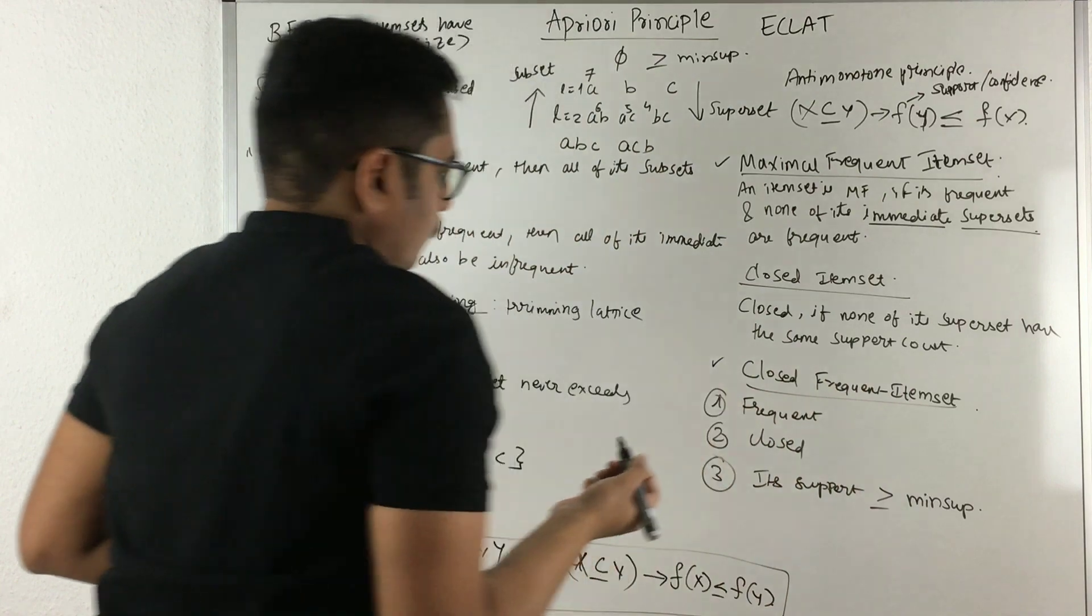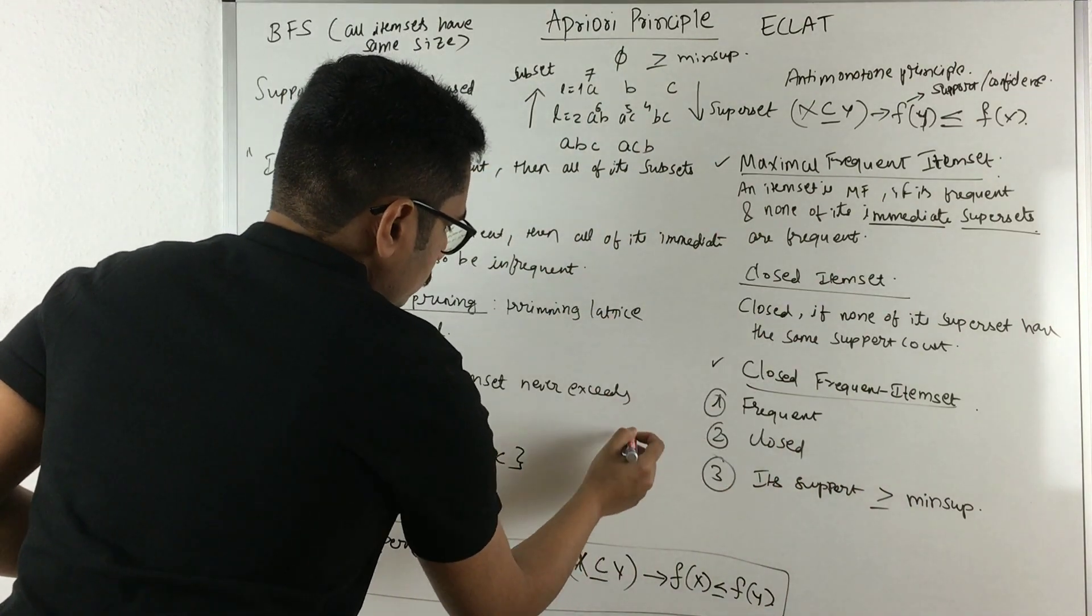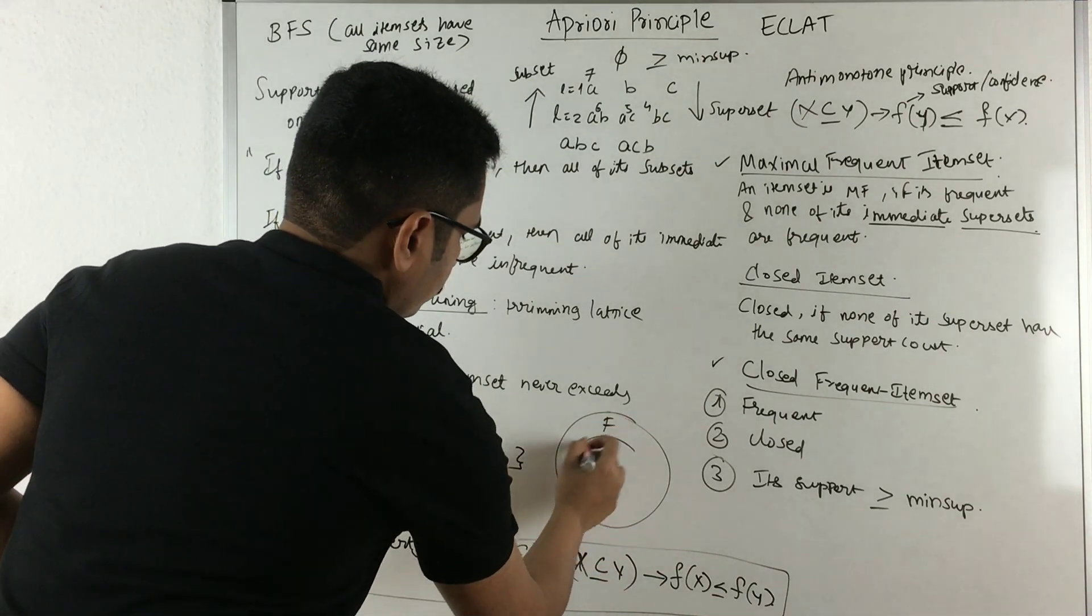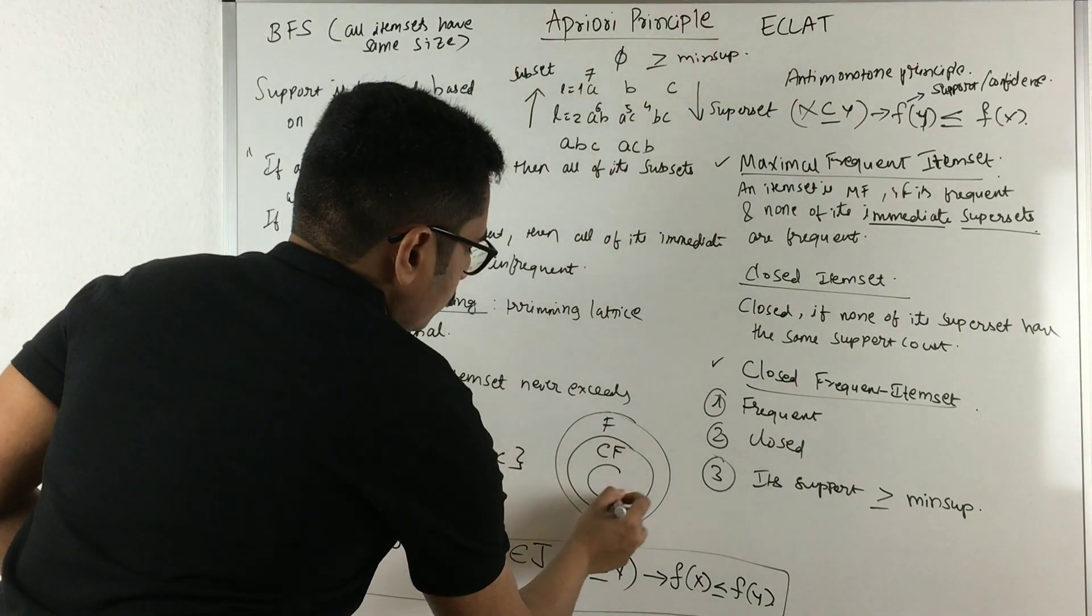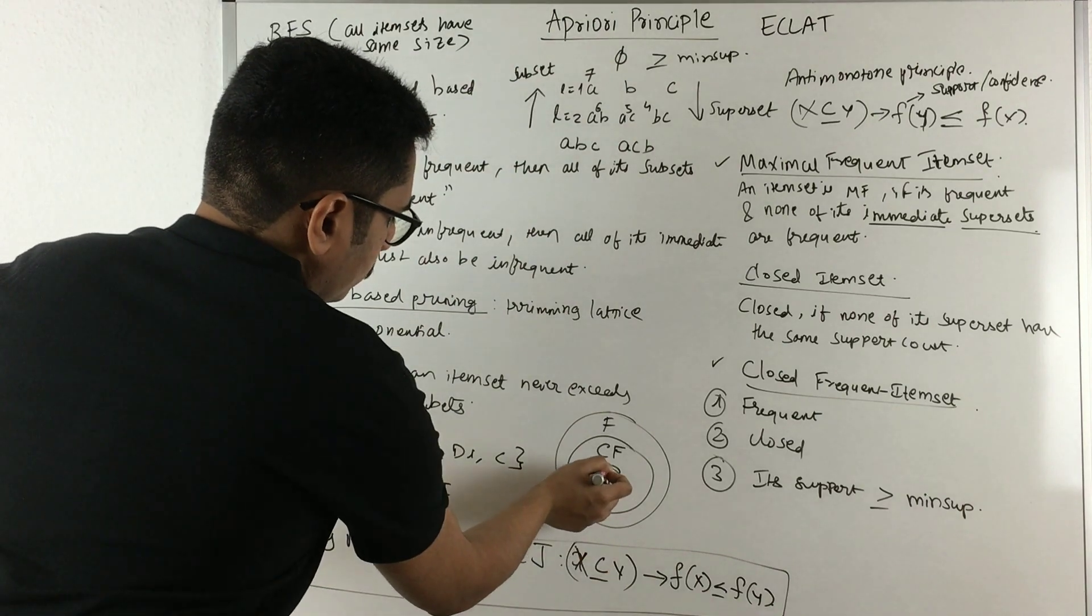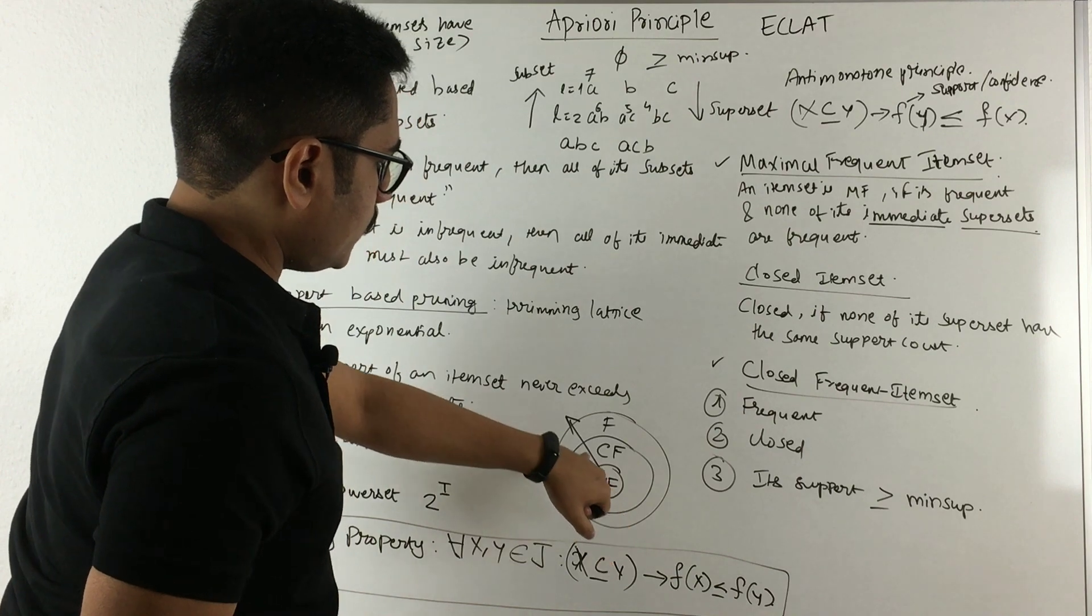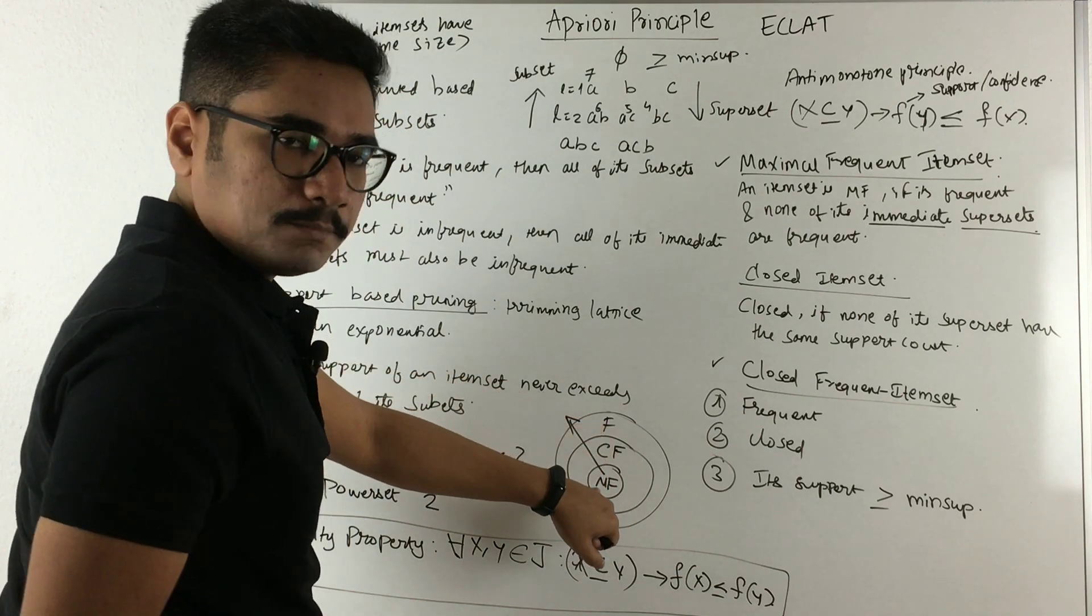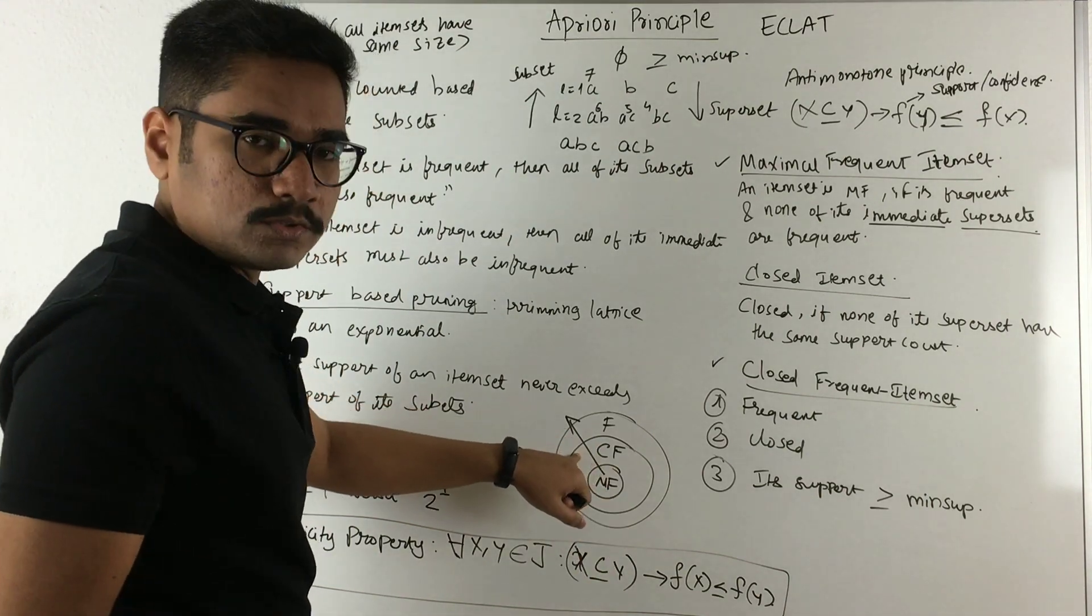A Venn diagram of what we have spoken here is: say you have frequent item sets, then you have closed frequent, and then you have maximal frequent. The proximity is from inside to out. So first it should be maximal frequent, then it is closed frequent, and then it is frequent. So if an item set is maximal frequent, then automatically it will be closed frequent too.